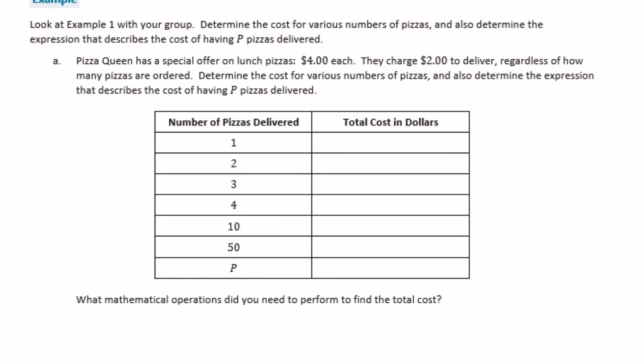Look at example 1 with your group. Determine the cost for various numbers of pizzas and also determine the expression that describes the cost of having P pizzas delivered. Pizza Queen has a special offer on lunch pizzas, $4 each. They charge $2 to deliver regardless of how many pizzas. So it doesn't matter if you get one pizza or 80 pizzas. It's going to cost $2 to deliver. Determine the cost for various numbers of pizza and also determine the expression that describes the cost of having P pizzas delivered.